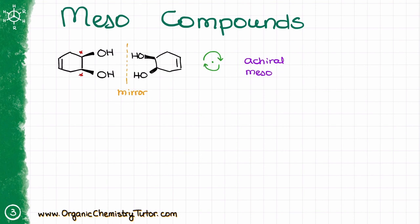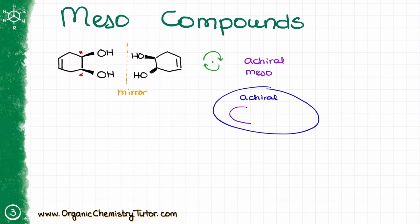Remember that meso compounds are always achiral. All meso compounds are achiral molecules. However, not all achiral molecules are meso compounds. You can think of the entire realm of achiral molecules, and inside that realm there is a sub-realm of meso compounds — they are a subclass of achiral molecules. A meso compound is a characteristic of a molecule itself, not a relationship between molecules. The relationship between a meso compound and its mirror image is that they are identical.